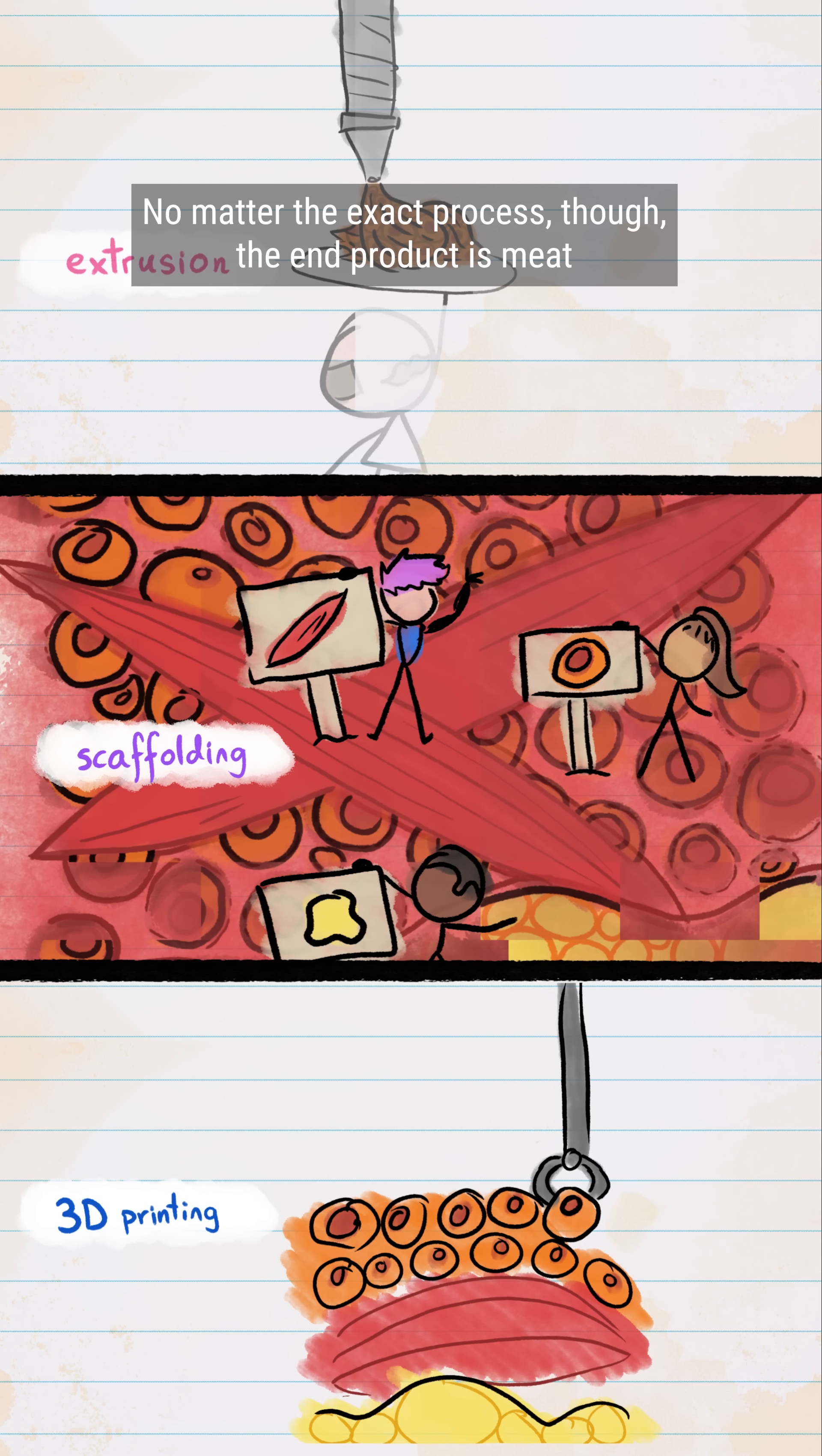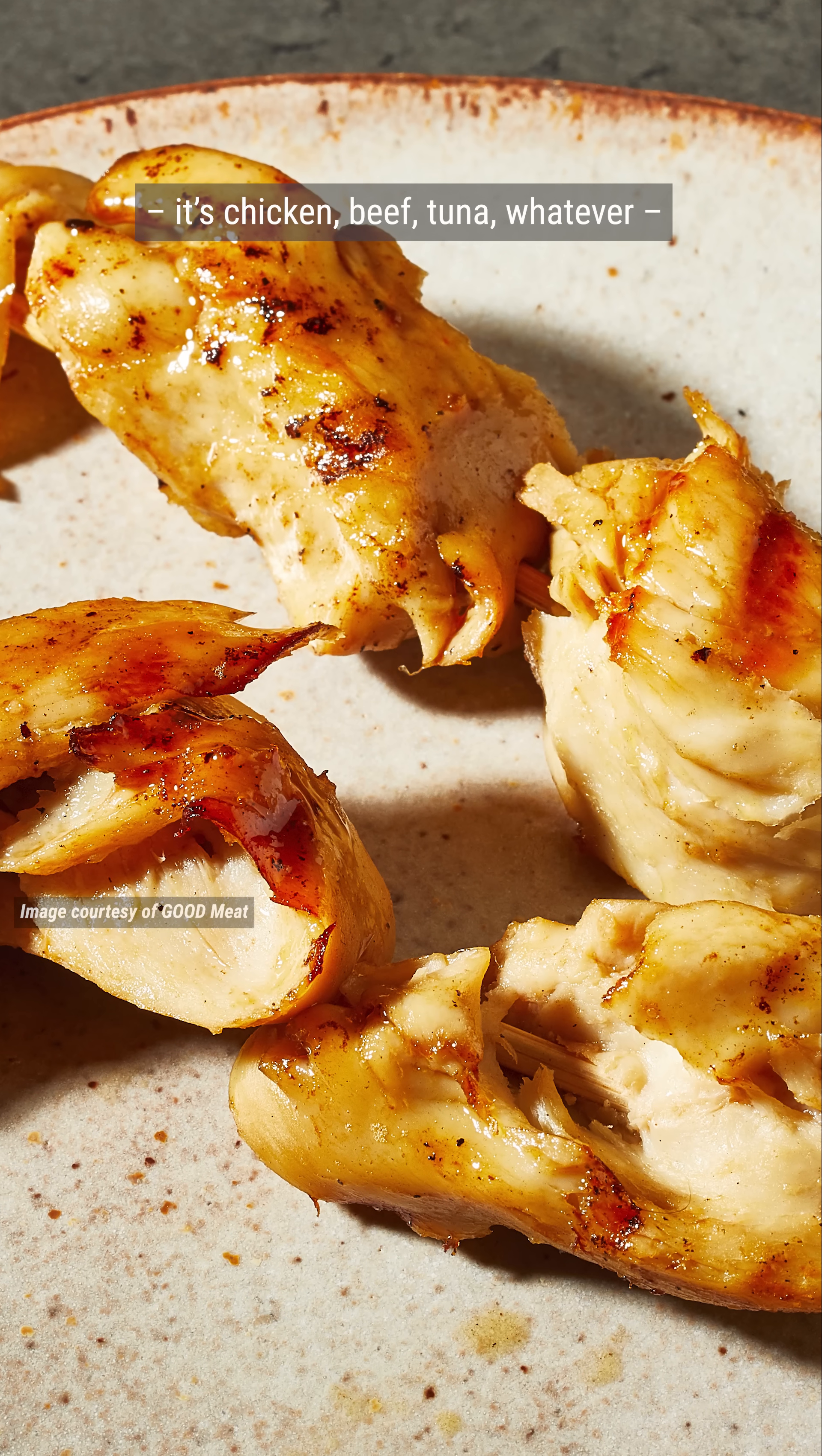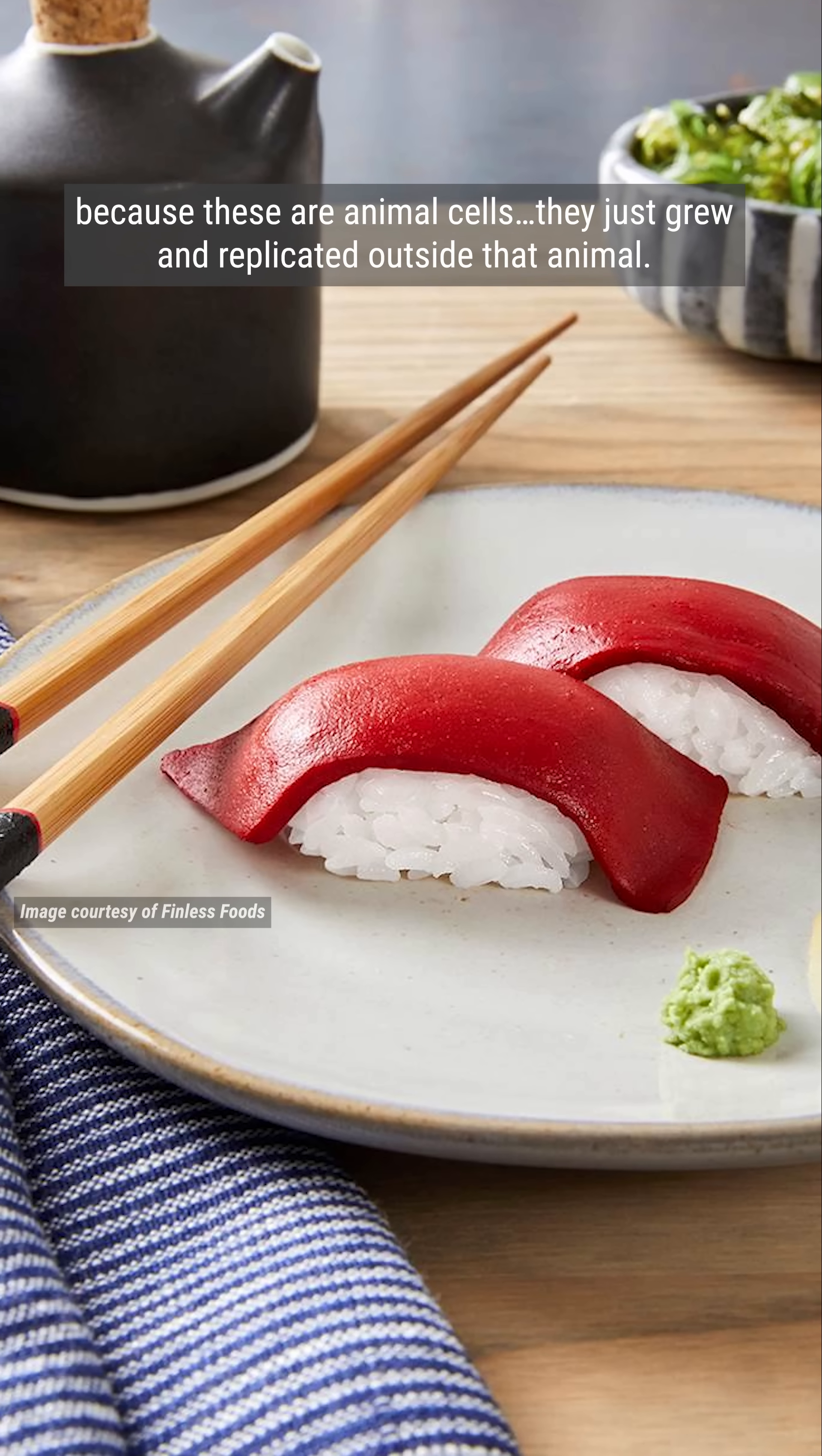No matter the exact process, though, the end product is meat. It's chicken, beef, tuna, whatever, because these are animal cells. They just grew and replicated outside that animal.